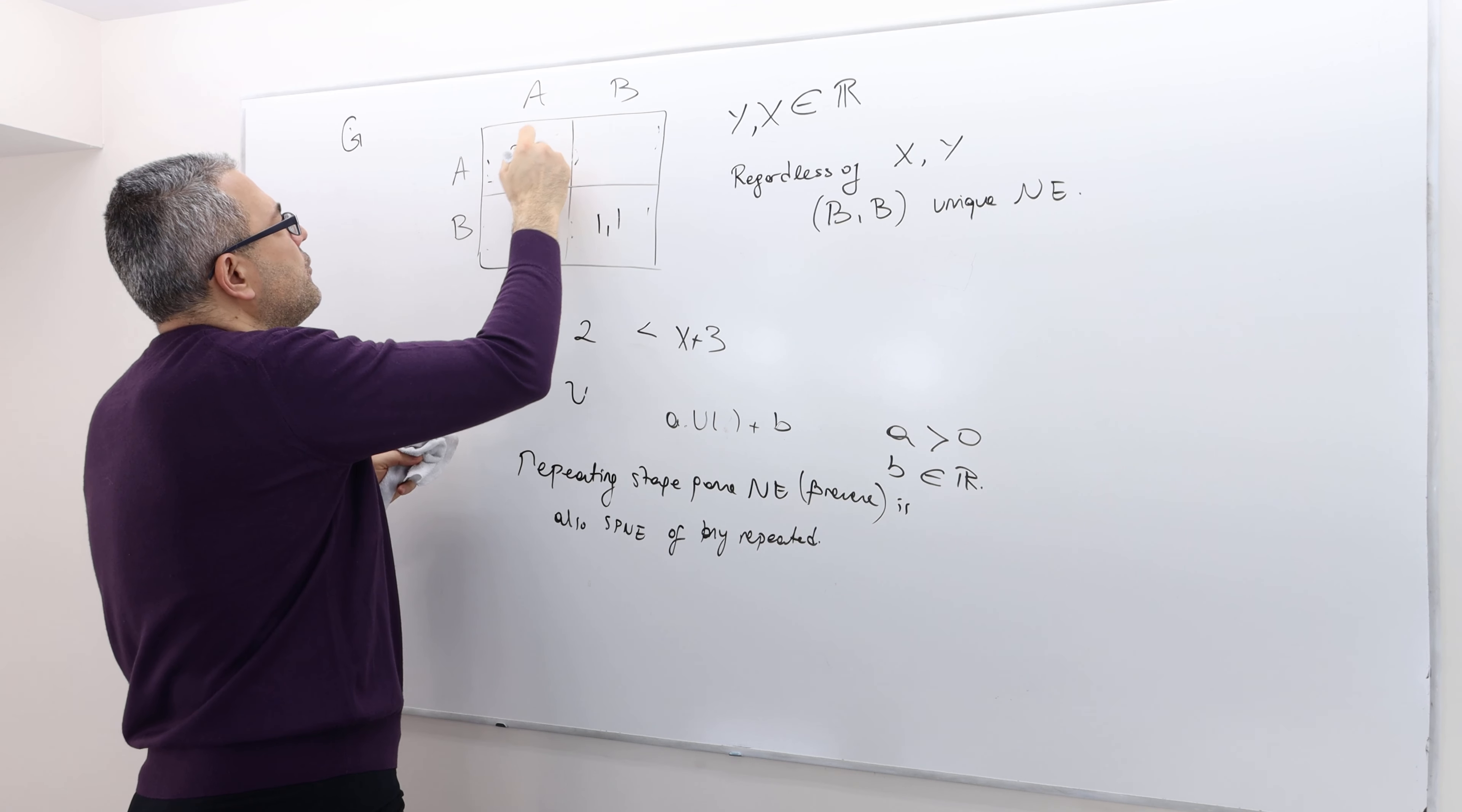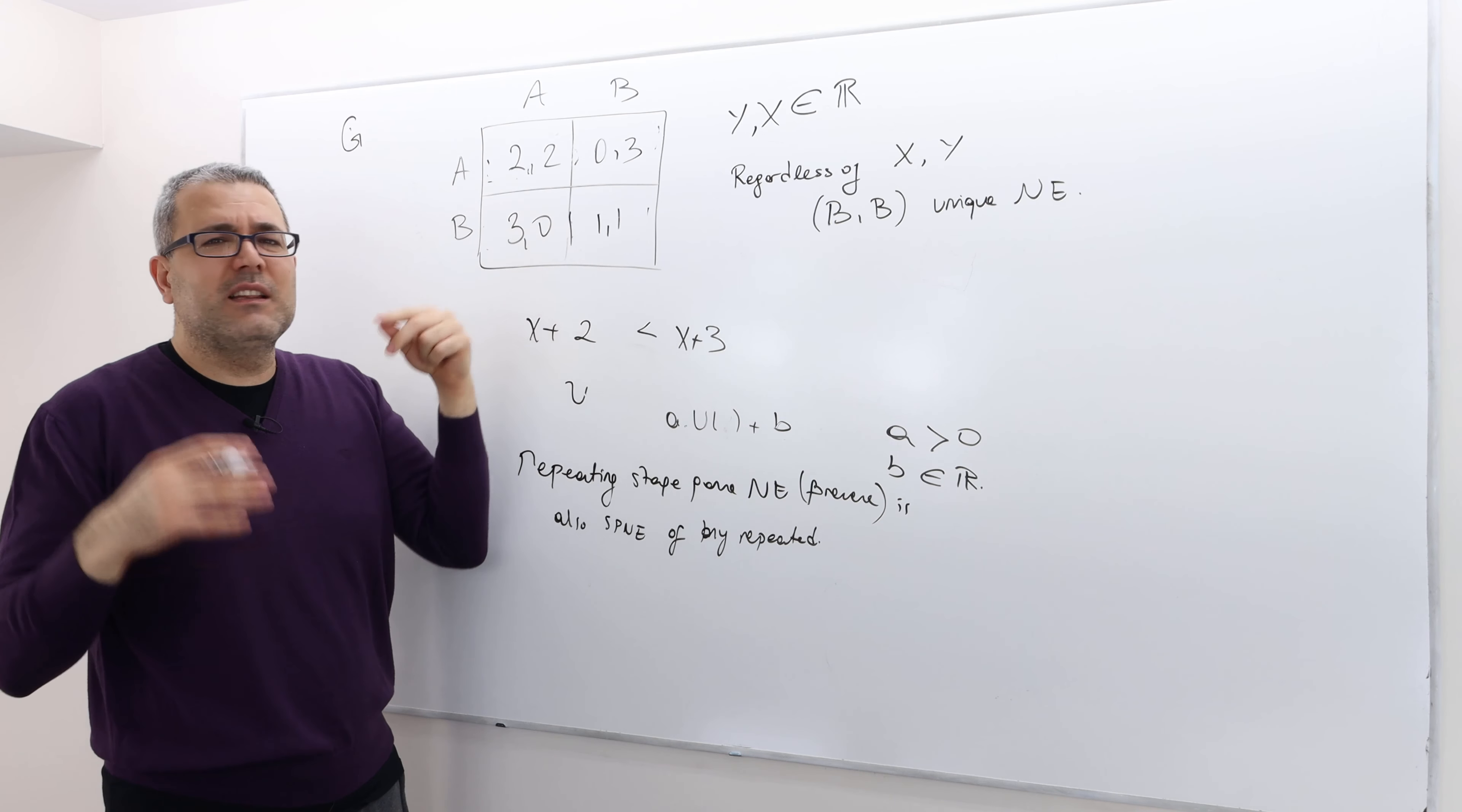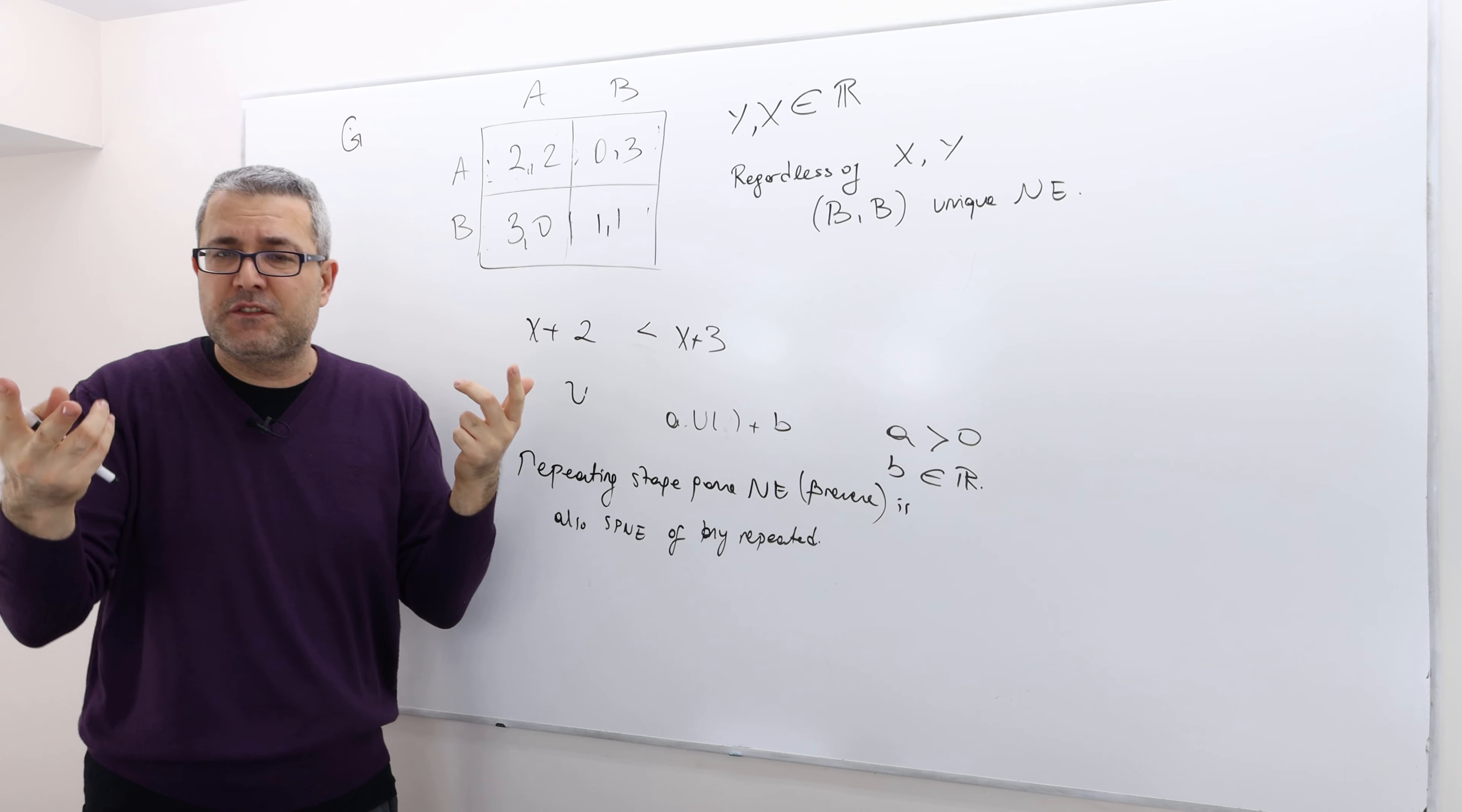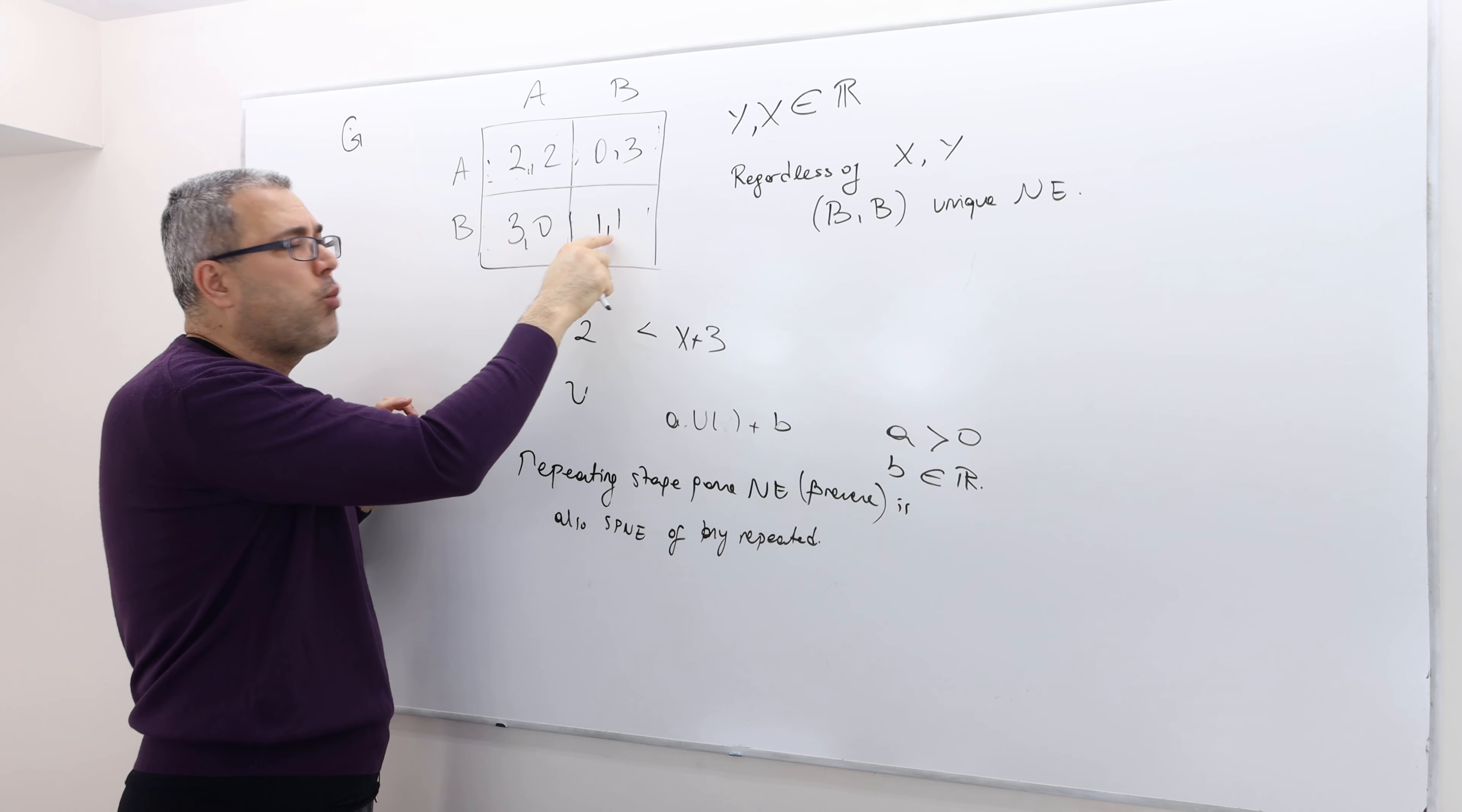So it's two, two, zero, three, three, zero, one, one. So what happens is at the last period, we're going to play BB. We're going to get one each. And then in the period before last, the second T minus two, let's call it T minus two period.